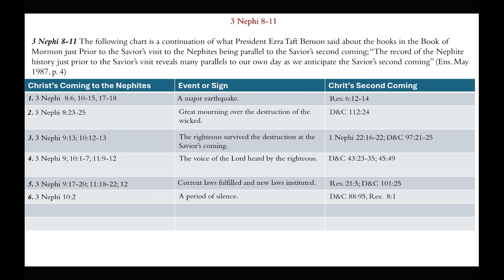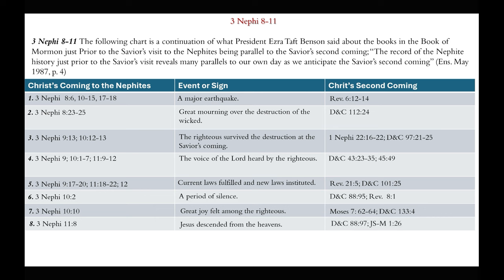Exactly what that period of silence means, I have not found a good explanation yet. Number 7, 3rd Nephi 10:10 — great joy was felt among the righteous in the Book of Mormon prior to his coming, per Moses 7 and D&C 133. Number 8, 3rd Nephi 11:8 — Jesus descended from the heavens, and per D&C 88 and Joseph Smith—Matthew 1:26, Christ will again descend from the heavens.